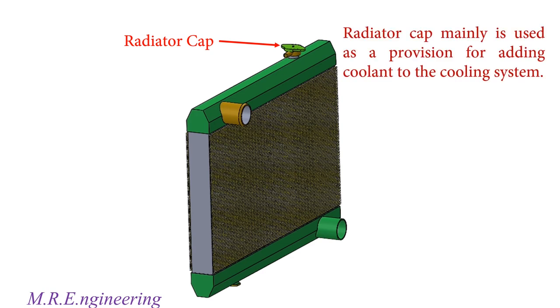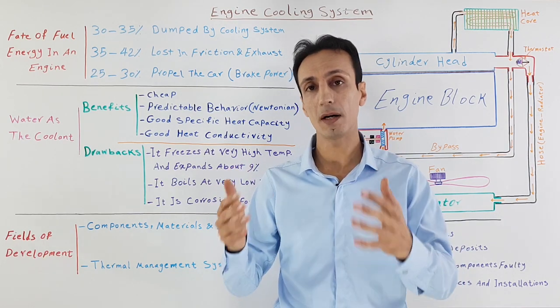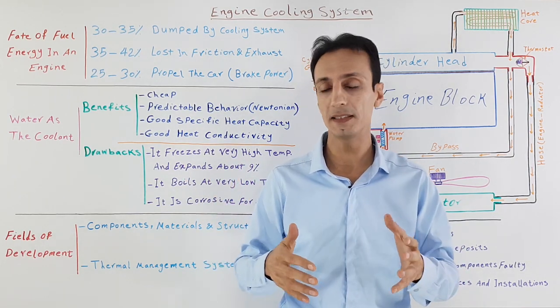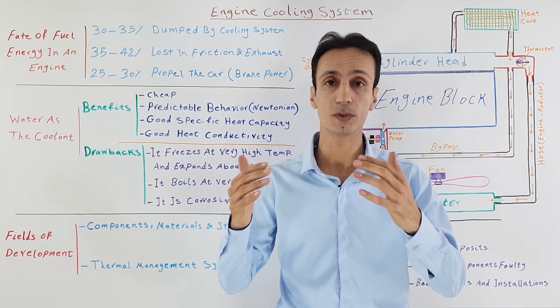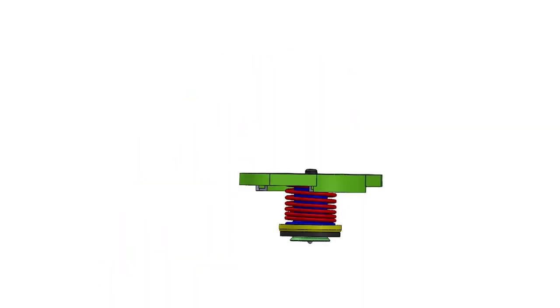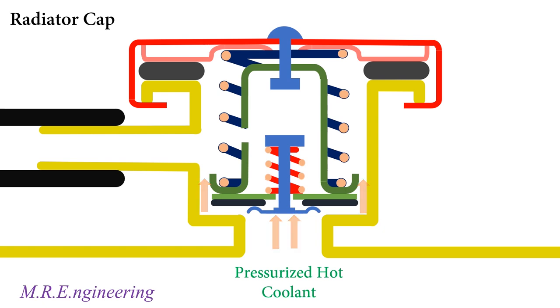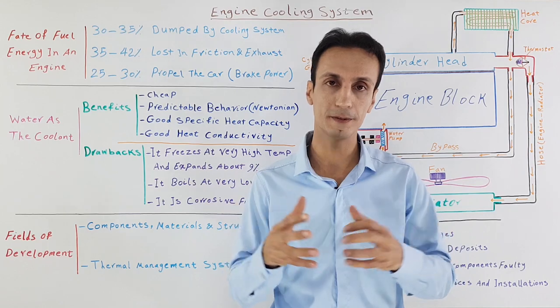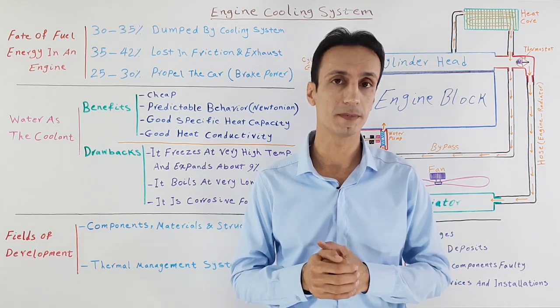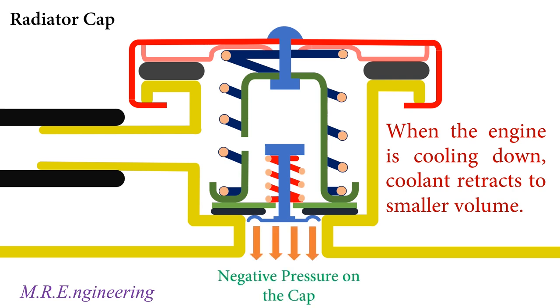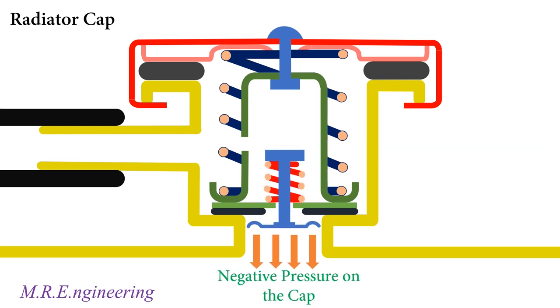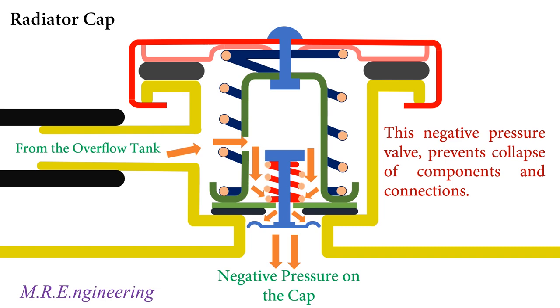When the coolant temperature rises, it expands and builds up pressure in the system. The system needs a provision to release pressure if it goes over a pre-adjusted value. This is a spring-type pressure valve in the radiator cap to prevent severe damage to fittings and components. When the engine turns off and coolant cools down, it retracts to a smaller volume. Another spring-type pressure valve on the radiator cap opens at the effect of negative pressure and allows coolant or air to return to the radiator, preventing collapse of components.